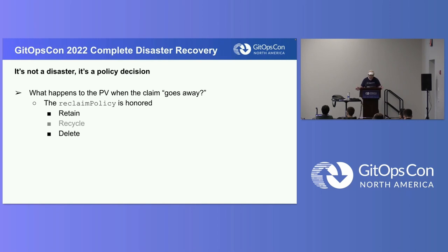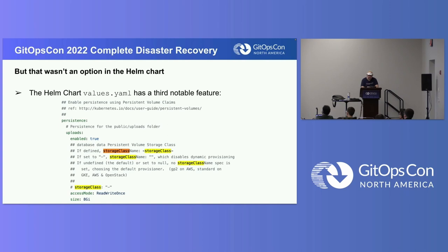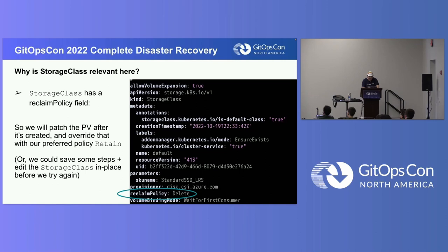What did we learn? It's not a disaster yet — it's a policy decision. We have chosen, or Kubernetes has chosen for us, to make the default policy 'delete.' Retain, recycle, and delete are all valid reclaim policy settings, but recycle is not very interesting. So let's say our choices are retain and delete. We told Kubernetes to delete it — yes, it's the default.